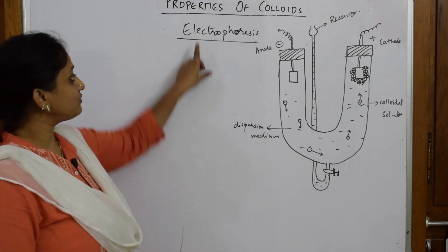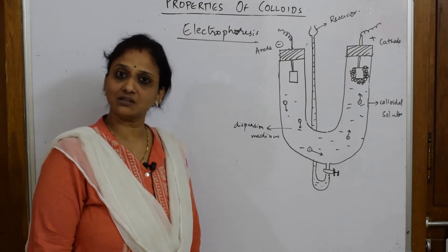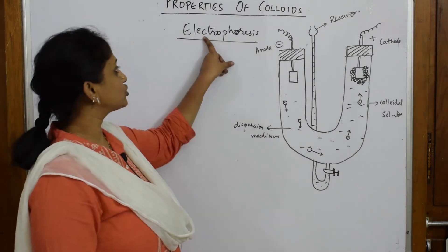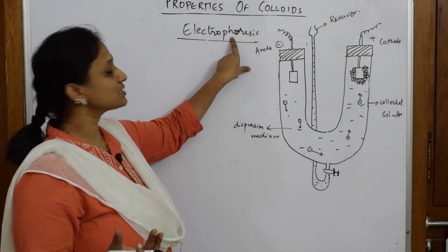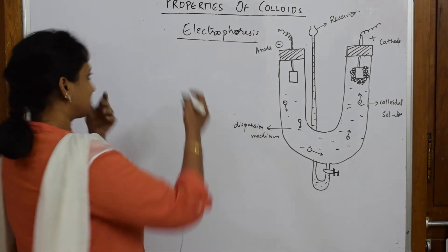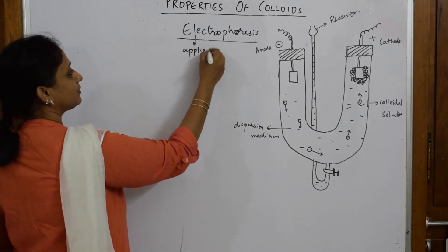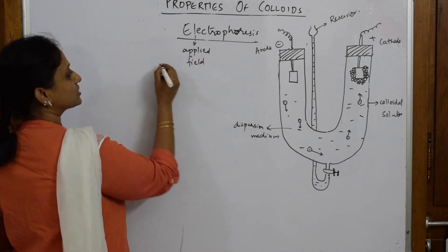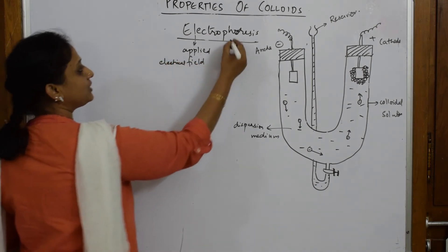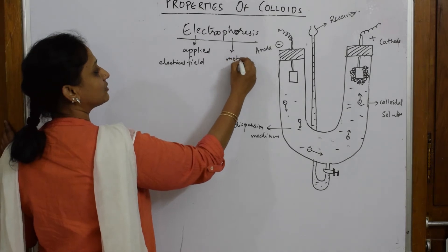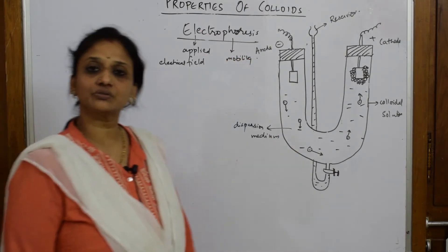When we speak about electrophoresis, they'll directly ask you to explain the concept. 'Electro' means applied EMF or applied electrical field. 'Phoresis' means mobility. So let's write that: electro means applied electrical field, phoresis means mobility.